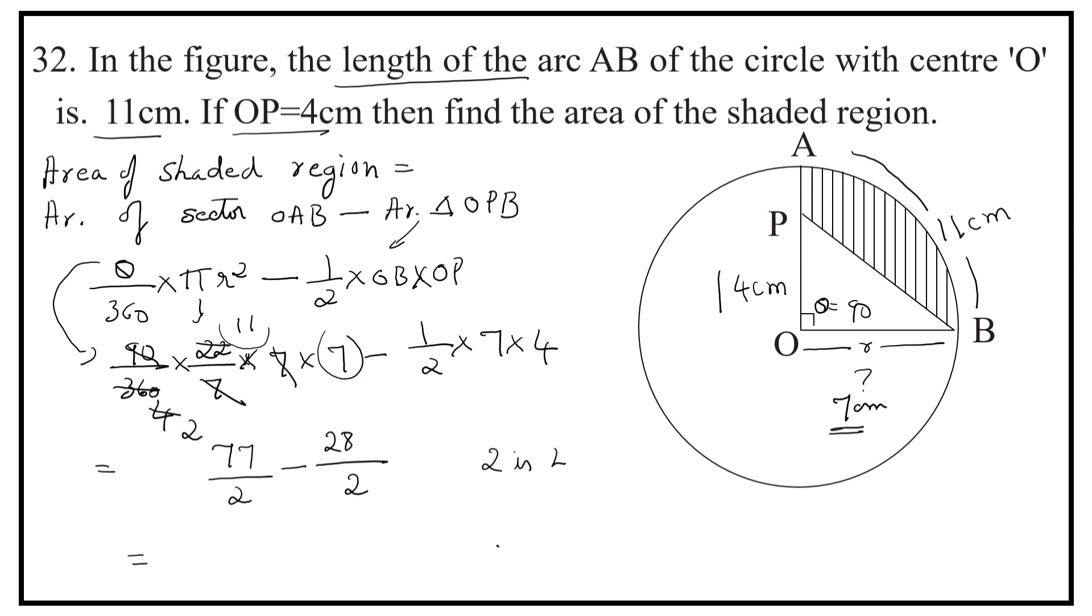Here, you can observe that 2 is common. So, 77 minus 28 by 2. That is equal to 49 by 2.